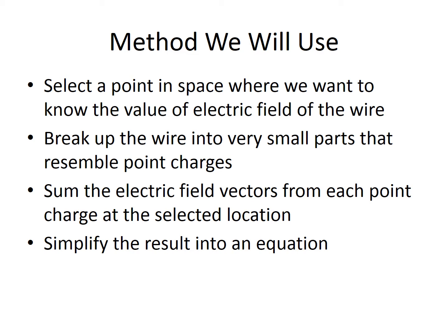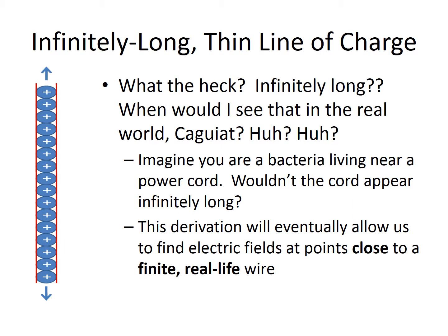After all our simplification, we'll have a compact equation we can apply to actual charged wires. The object is an infinitely long, thin line of charge. One way to visualize this is to think of yourself as a small bacterium living near a wire — the wire appears so gigantic that it seems to go off to infinity in both directions. This means whatever result we come up with will be valid for points very close to a charged wire, but not points very far away.